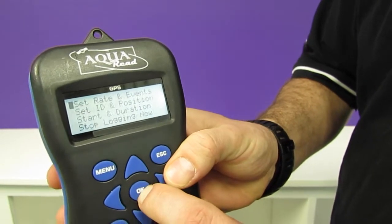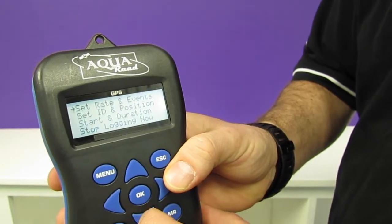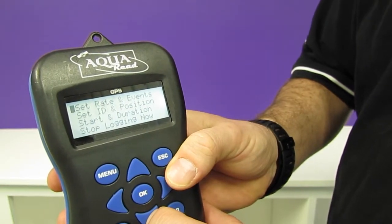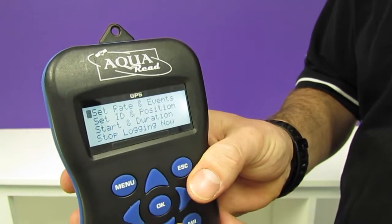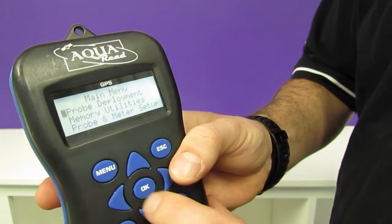If we go into the probe deployment section here we can set up rate and events, we can set up IDs and positioning, start durations, and we can also control logging live on the meter in this section.